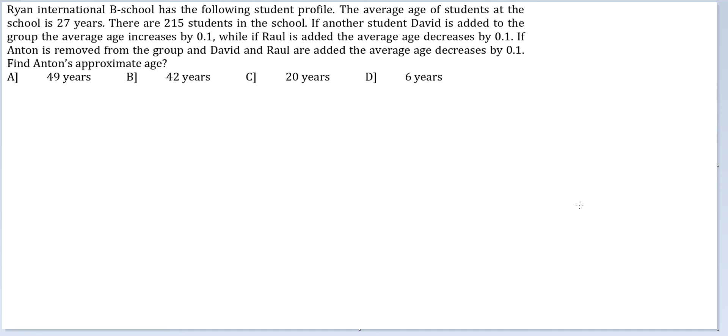Here understanding of averages is critical. Look at this. If David is added, the average age increases by 0.1. What this means is, David's age should be the average plus he is bringing 0.1 extra for how many people? 216. So his age should be 27 plus 21.6 or 48.6. This is the age of David.